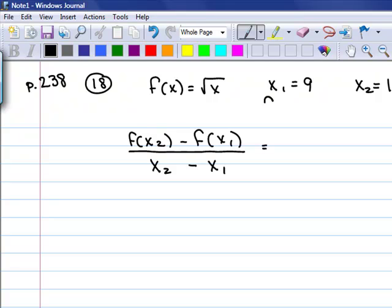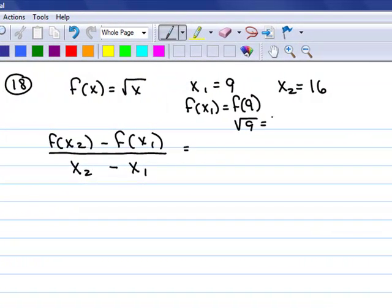You need f of x sub 2 and f of x sub 1. x sub 1 is f of 9. Put the 9 into the square root function, and the square root of 9 is 3.